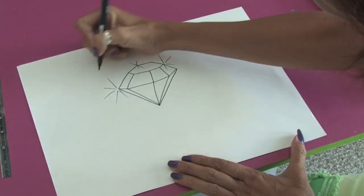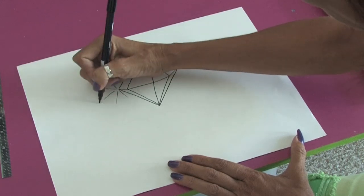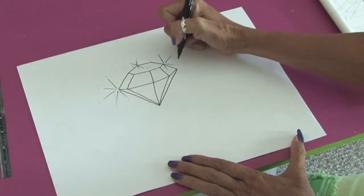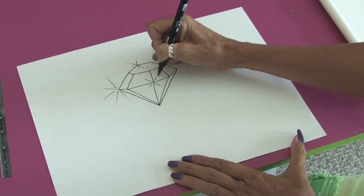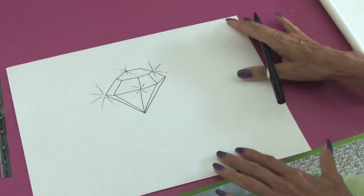And you can add some little dots. A couple more lines. And there you have it, a sparkly diamond. This has been Jacqueline Laflamme. Thank you for watching.